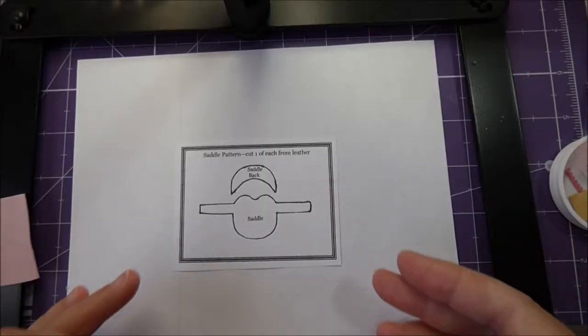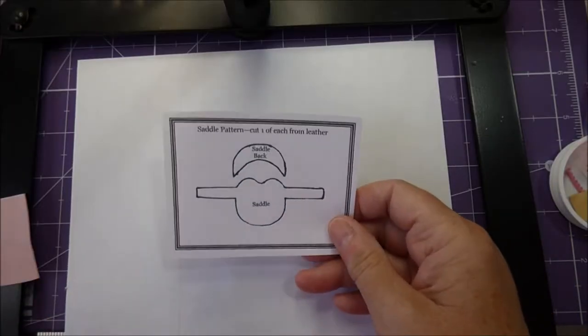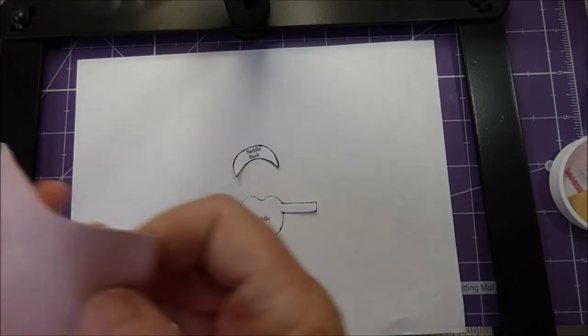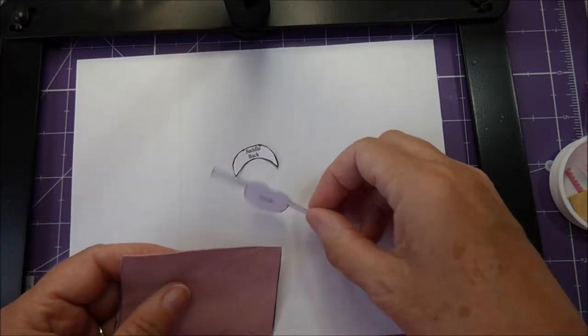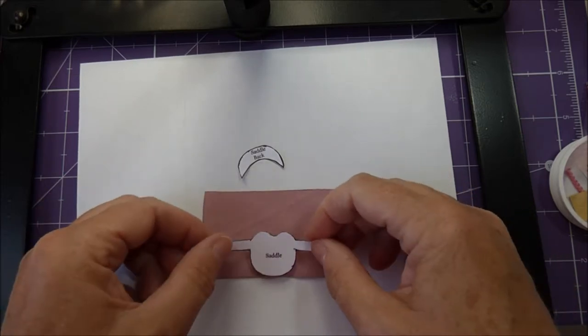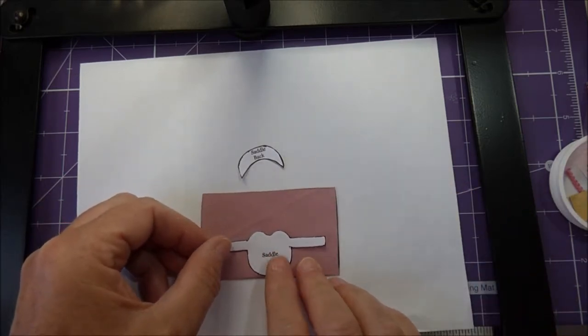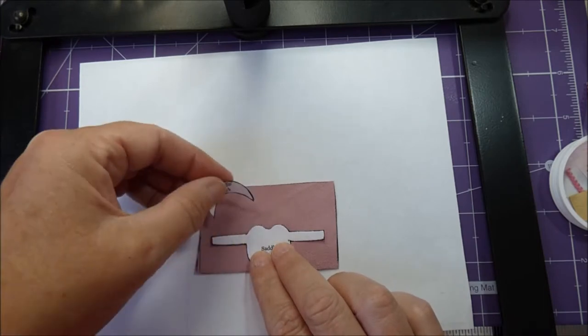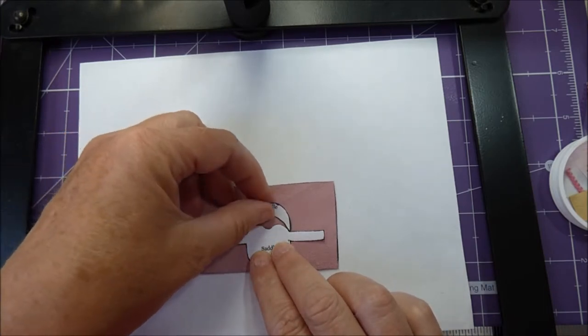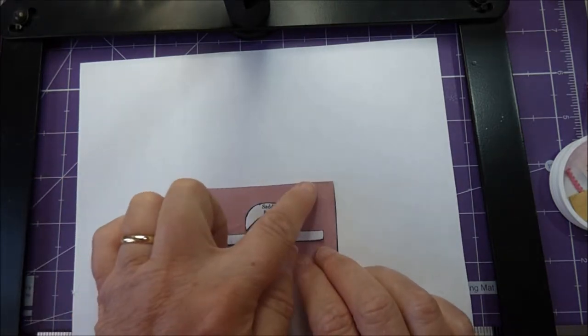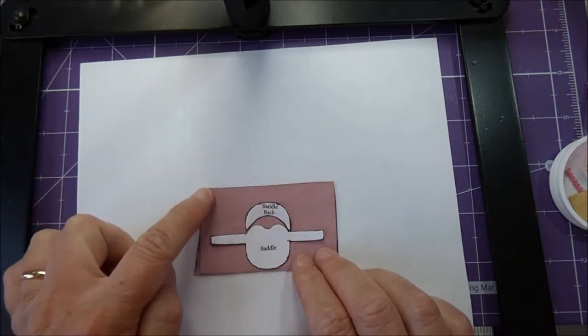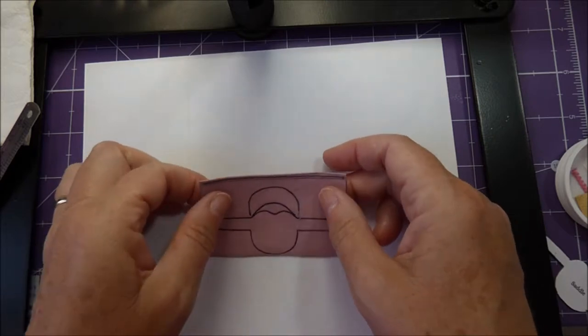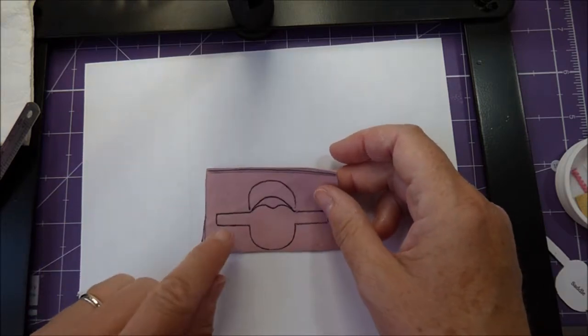Now you need the pattern sheet and cut out the saddle and the saddle back. You're going to use the piece of leather on the wrong side. If you lay out the saddle and the saddle back as shown, you will still have enough leather left over along the top and along the side to cut out the head harness and the reins.